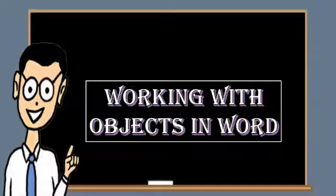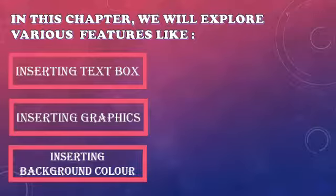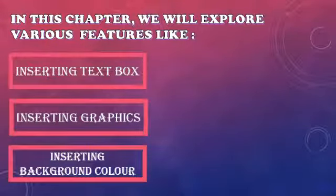Hanna, Word mein jo bhi hum type karte hain unki formatting sikhi thi humne, ki usko different different styles mein kaise change kar sakti hain, hum usko attractive kaise bana sakti hain. Ab hum humare document mein alag-alag cheezein, alag-alag objects insert karna sikhenge. In this chapter we will explore various features of MS Word like inserting a text box, inserting graphics, inserting background color, inserting Word Art, pictures, tables, etc.